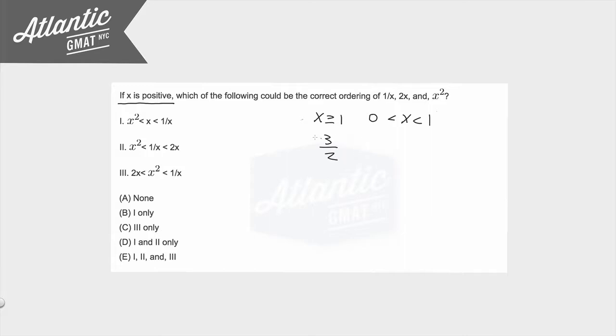But 3 halves is going to behave a lot like 2 or 5 when plugged into these. When you put it underneath, it's going to make the number smaller. When you multiply it by 2, it's going to make the number bigger.